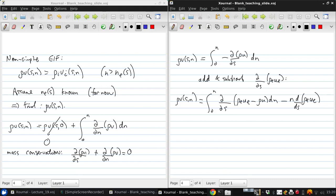So then we can take the d/ds outside the integral because the integrand is 0 at the upper limit of n which is why the upper limit of n must be greater than n_e. So times the integral from 0 to n_e of (1 minus ρu/ρ_e u_e) dn minus n d/ds (ρ_e u_e).